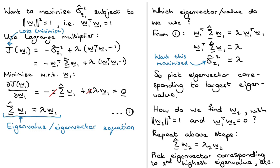The PCA algorithm basically boils down to finding eigenvalue-eigenvector pairs after mean-normalizing your data. With that, you now know how to find the projection vectors for PCA. Here we used the view that PCA maximizes variance in the projected space. In the next video, we will see that another view of PCA leads to exactly the same solution.